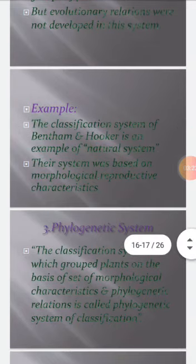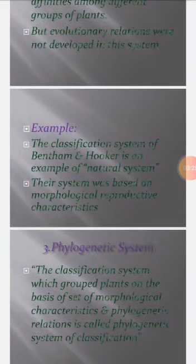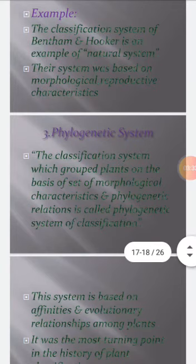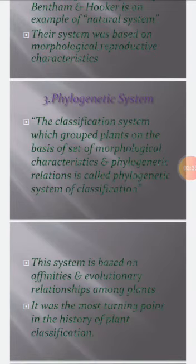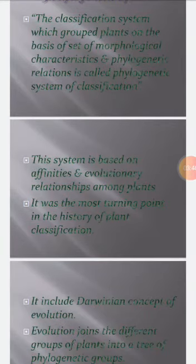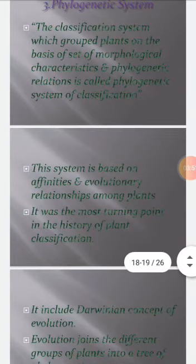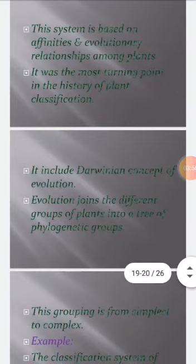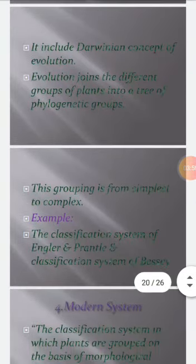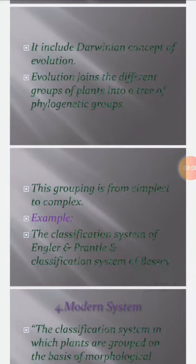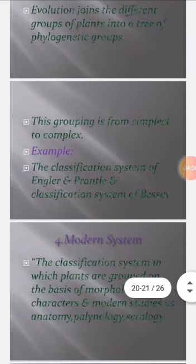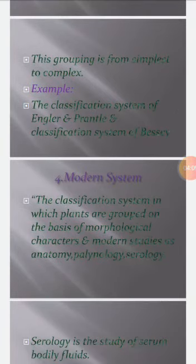The third is the phylogenetic system. The classification system which groups plants on the basis of morphological characters and phylogenetic relations is called the phylogenetic system of classification. The system is based on affinities and evolutionary relations among plants. It was the most significant turning point in the history of plant classification, as it included the Darwinian concept of evolution. Evolution joins and links different groups of plants into a tree of phylogenetic groups — that is, there is some link present between the plants — and this grouping is from simplest to complex. Examples are the classification systems of Engler and Prantl, and the classification system of Bessey.